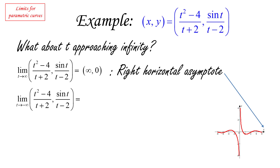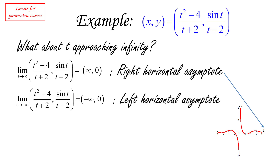Similarly, if we let t go to negative infinity, we end up with negative infinity comma zero, giving us the left horizontal asymptote. The graph here is not as clear because horizontal asymptotes can cross the graph as many times as you want. Because we have a sine(t) in the function, this is going to happen infinitely many times, and the curve is going to bounce above and below the asymptote.